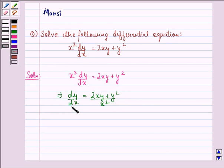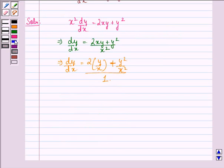Now we see that it is a homogeneous differential equation. So we can divide the numerator and denominator by x². And we get dy/dx = 2y/x + y²/x². Now what we do is...